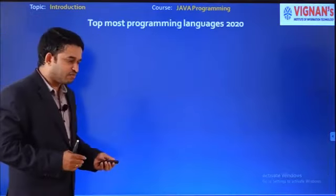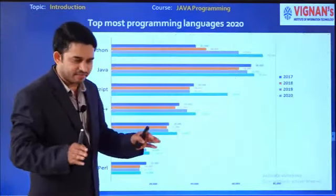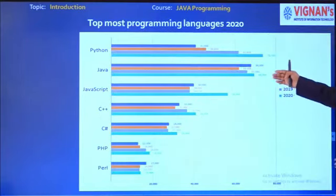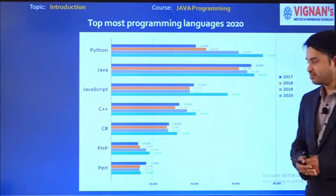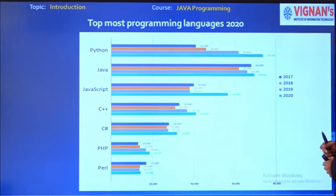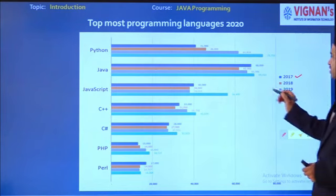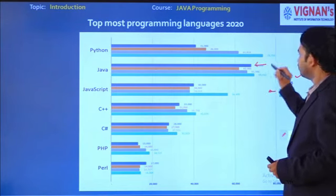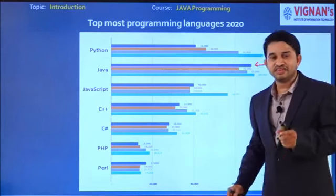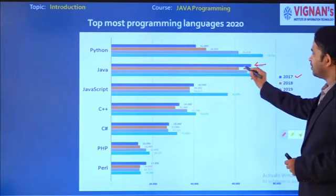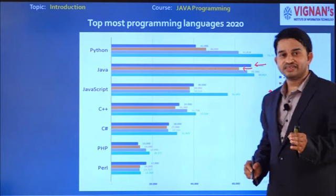Now let's look at the topmost programming languages in the present era. Here is a four-year analysis covering Python, Java, JavaScript, C++, C#, PHP, and Perl. In 2017, when compared to all other languages, Java is the most popular. Checking 2018 — Java is most popular. In 2019 also, Java is the most popular language.